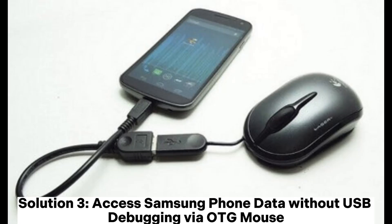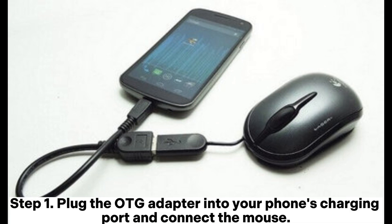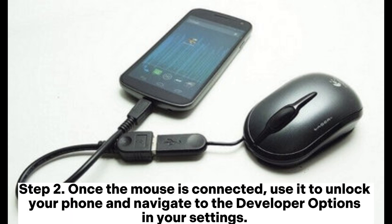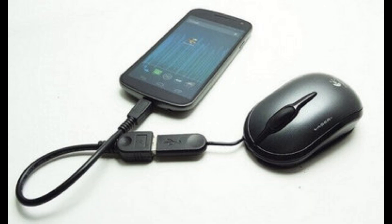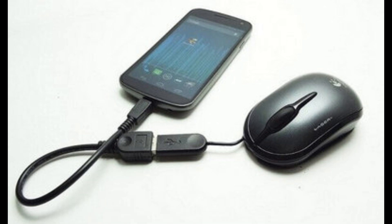Solution 3: Access Samsung phone data without USB debugging via OTG mouse. Step 1: Plug the OTG adapter into your phone's charging port and connect the mouse. Step 2: Once the mouse is connected, use it to unlock your phone and navigate to the developer options in your settings. Enable USB debugging from there.